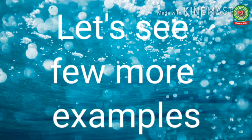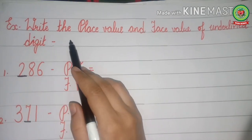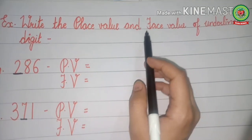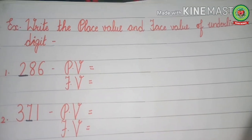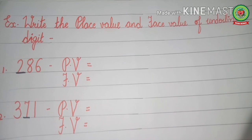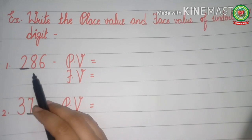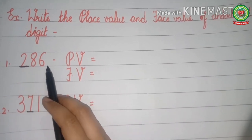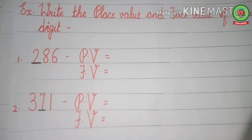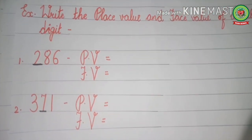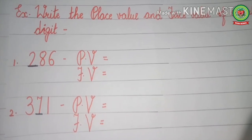Now let's see a few more examples. Read the statement carefully with me: write the place value and face value of the underlined digit. It means whichever digit is underlined, we will write its place value and face value. In number one — 286 — the digit 2 is underlined, so we will write the place value and face value of 2. Our first step is to write down the place value chart: ones, tens, and hundreds.